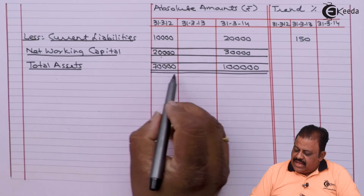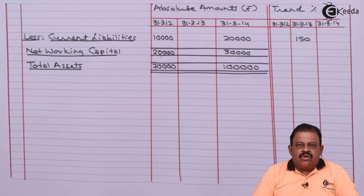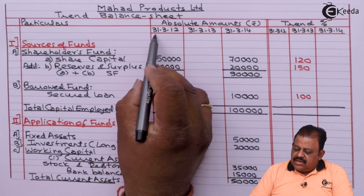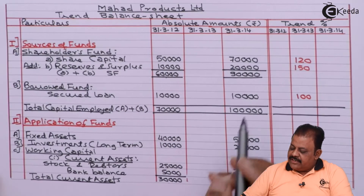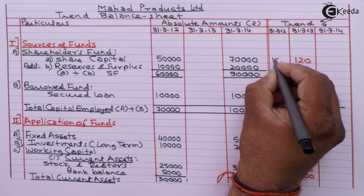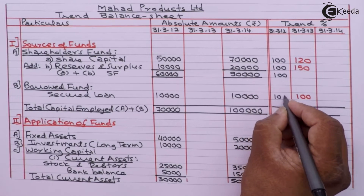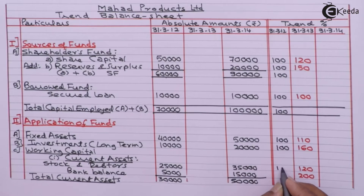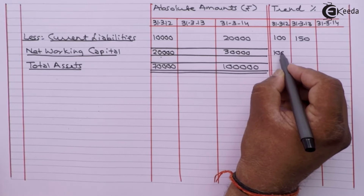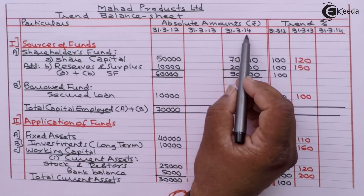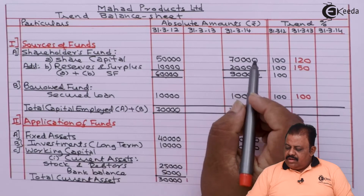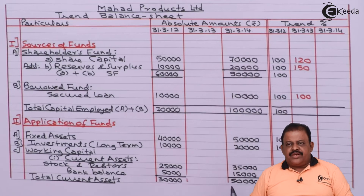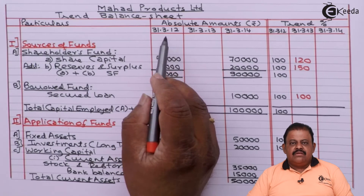Now let us proceed with completing the trend part of the statement. The base year is 31st March 2012, so all values corresponding to this year in the trend part will be taken as 100. For the year 31st March 2014 we have absolute amounts, so we can complete that column. The formula is: value in current year (31st March 2014) divided by value in base year (31st March 2012), multiplied by 100.